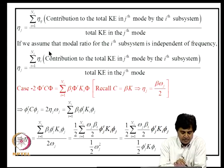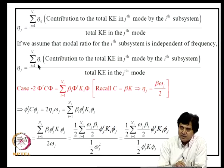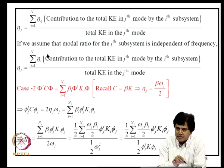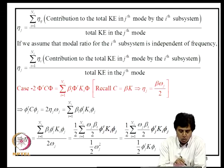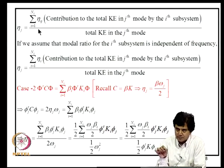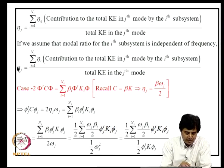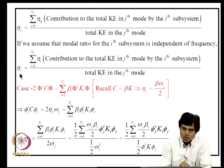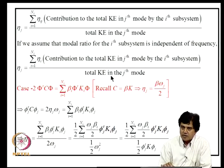If we assume eta_IJ is independent of mode J for a given material — for example RCC at 5%, steel at 3%, soil at 10% — then eta_IJ reduces to eta_I. We then get an equivalent damping for the jth global mode in terms of material damping ratios weighted by kinetic energy contributions from each part of the structure.